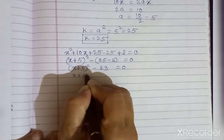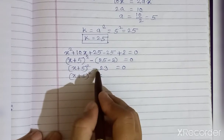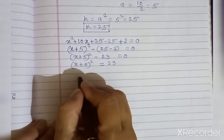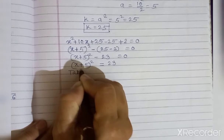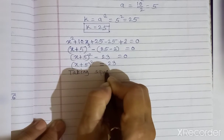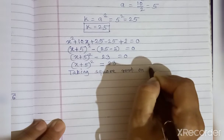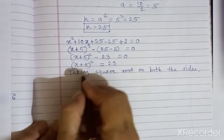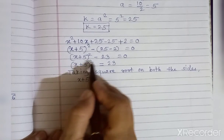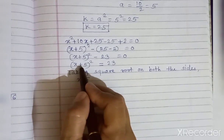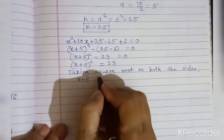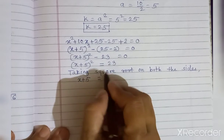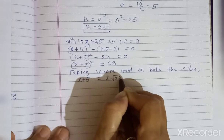Now (x + 5)² = 23, after taking 23 to the right-hand side it becomes plus 23. Taking square root on both sides, the square root of (x + 5)² is (x + 5), and the right-hand side gives plus or minus √23.